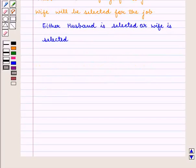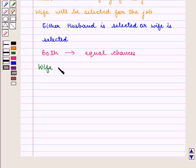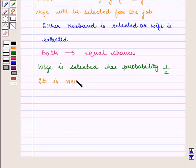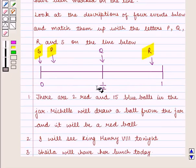So both have equal chances of getting selected. Both have equal chances of getting selected, one out of two. That is, it has probability 1 by 2 and it is neither likely nor unlikely event. Since it has probability 1 by 2, therefore it matches Q.